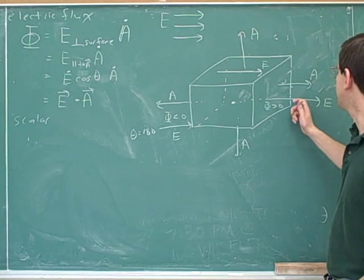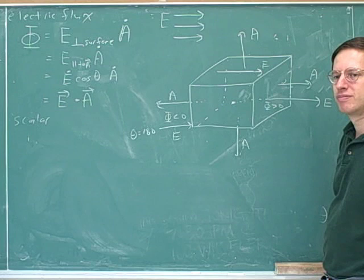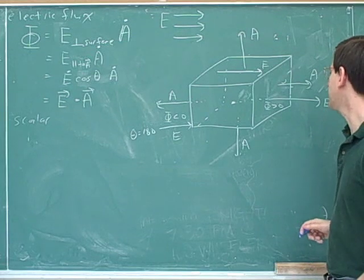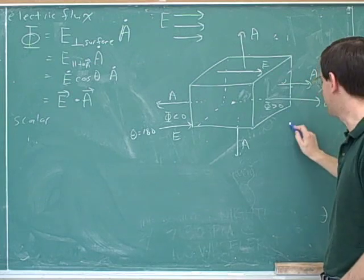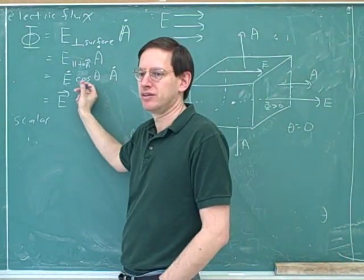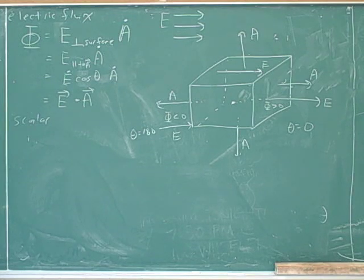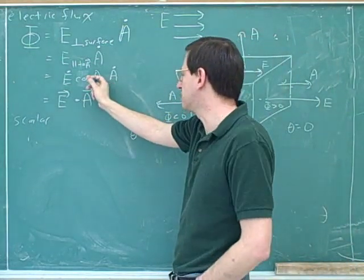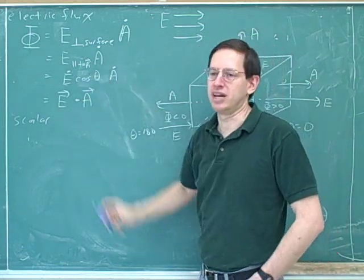Coming back to the right-hand face: the electric flux there is positive because the field lines are exiting. We can confirm this mathematically — the electric field and the A vector are parallel, so theta is zero. The cosine of zero is positive one. So the formula gives us positive flux here, in contrast to the left-hand face where cosine of 180° gives negative one. This formula correctly gives the sign of the flux.